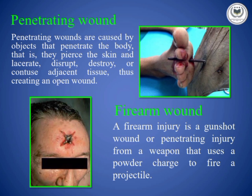A firearm wound is caused when a bullet or other projectile is shot into or through the body. A firearm wound can cause serious injuries including severe bleeding, damage to tissues and organs, and can also break bones.